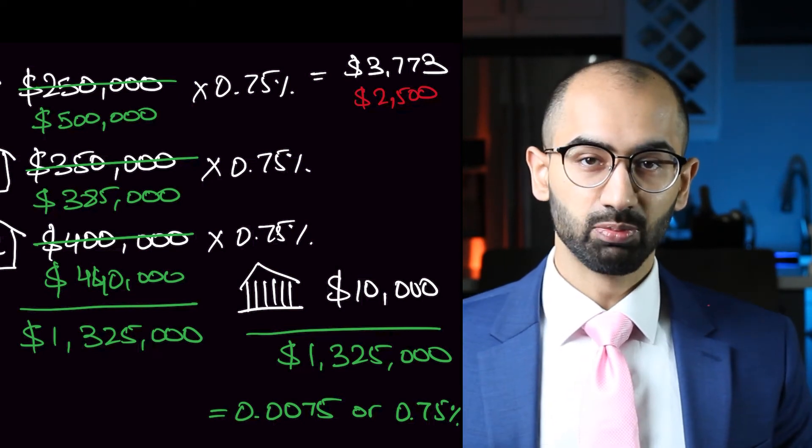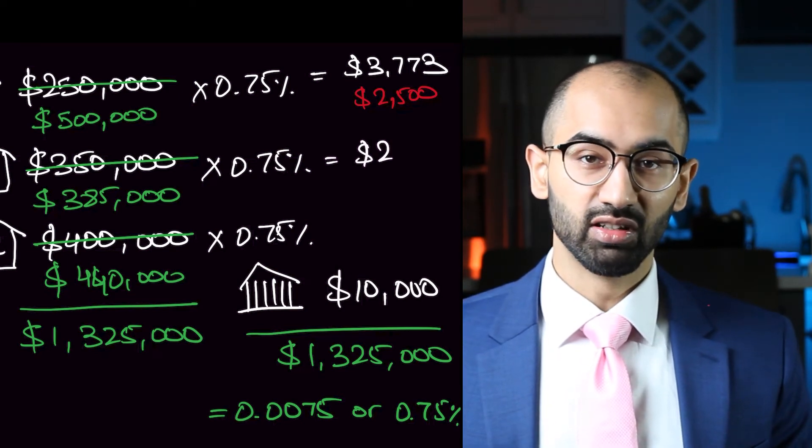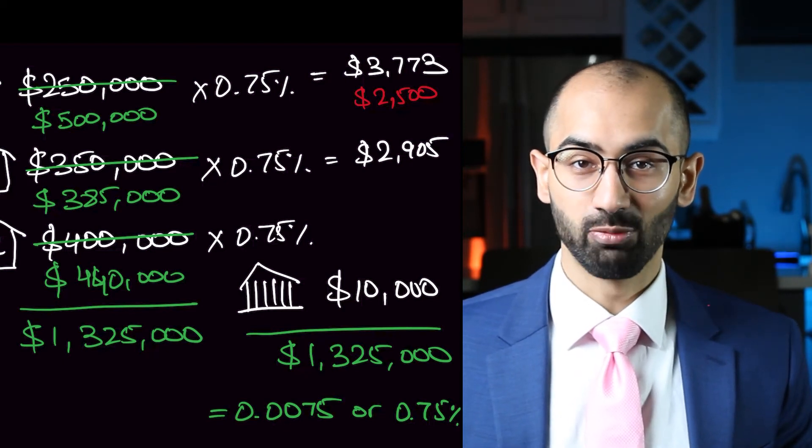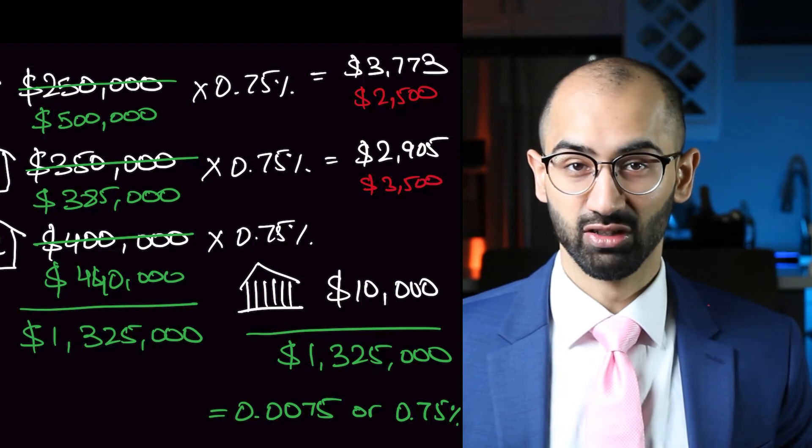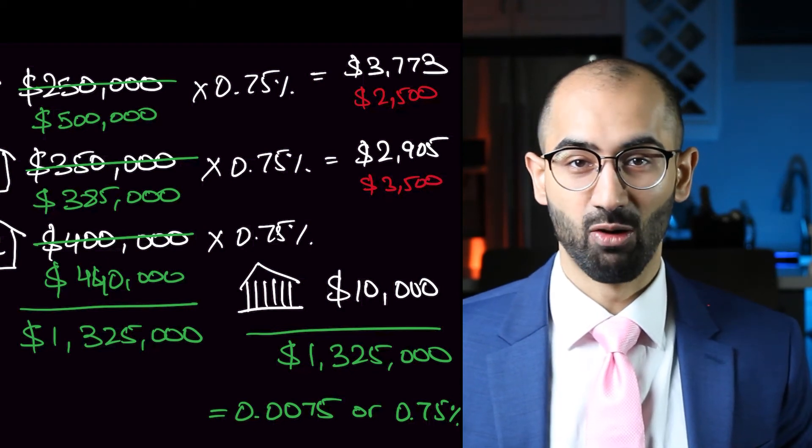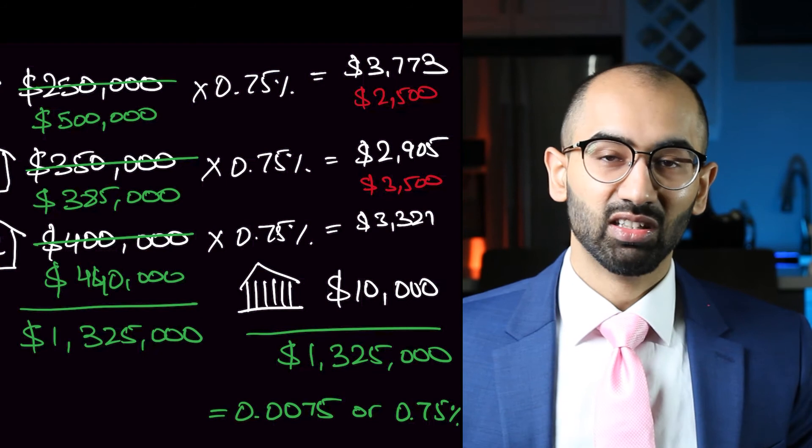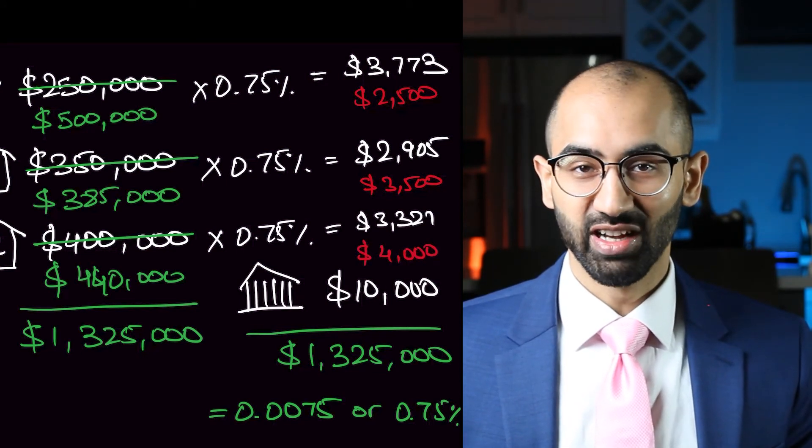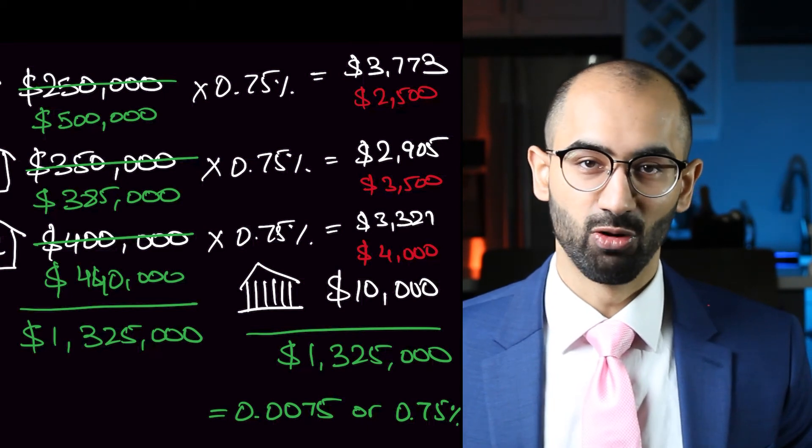That's crazy. House B pays $2,905, which is actually a 20.5% decrease from the $3,500 that they paid before. Wow. House C pays $3,321, which is an actual 17% decrease from the $4,000 that they paid before.